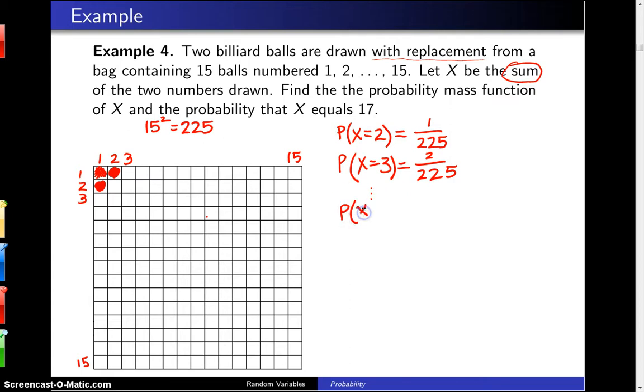So if you keep going along, the probability of getting, for example, 16, well that corresponds to all of these elements right across here, namely 15 and 1, 14 and 2, 13 and 3, etc. And if you count across, there are 15 of those out of the 225 possibilities.